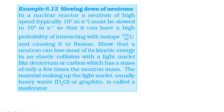Next question: slowing down of neutrons in a nuclear reactor. A neutron of high speed, nearly 10^7 m/s, must be slowed down to 10^3 m/s so that it can have a high probability of interacting with isotope uranium-235 and causing it to fission. A neutron can lose most of its kinetic energy in an elastic collision with a light nucleus like deuterium or carbon, which has a mass of only a few times the neutron mass. The material making up the light nuclei, usually heavy water or graphite, is called a moderator.